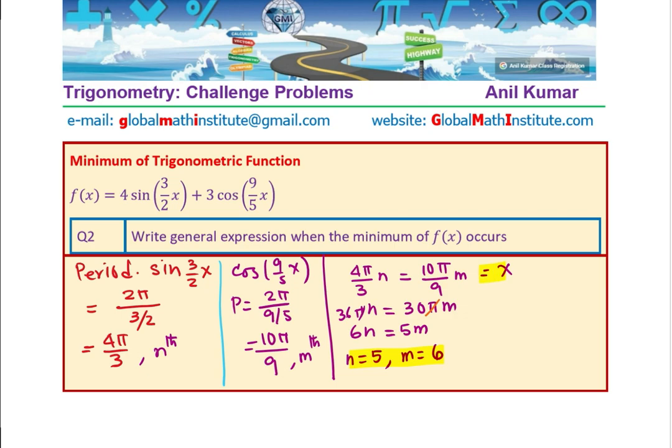Now, what is that value? That is the same period. That gives us the period. So, if I substitute here 4 pi by 3 n as 5, what do I get? Let us write down 4 pi by 3 times n as 5 gives us 20 pi by 3. So, 20 pi by 3 is the period when they overlap. So, 20 pi by 3 is the period of this wave f of x.